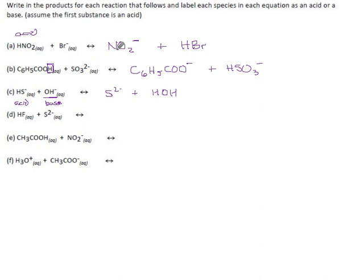Hydrofluoric acid — this is the only thing here that has a hydrogen to give, so it's our acid, and its conjugate base will be F⁻. Lose an H and lose a charge. The sulfide ion gains a hydrogen, giving hydrogen sulfide HS⁻, and the total charge goes from negative 2 up to negative 1.